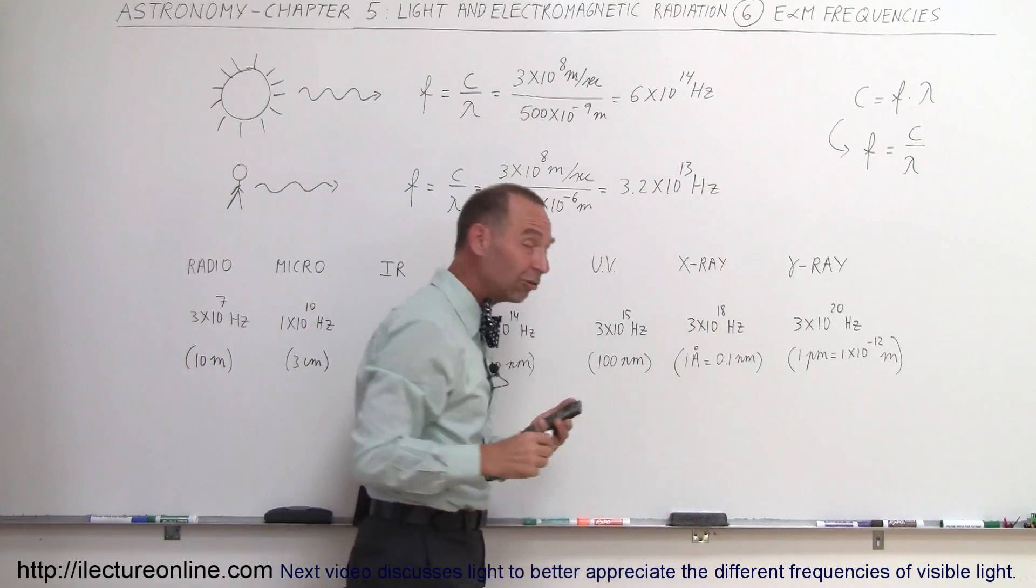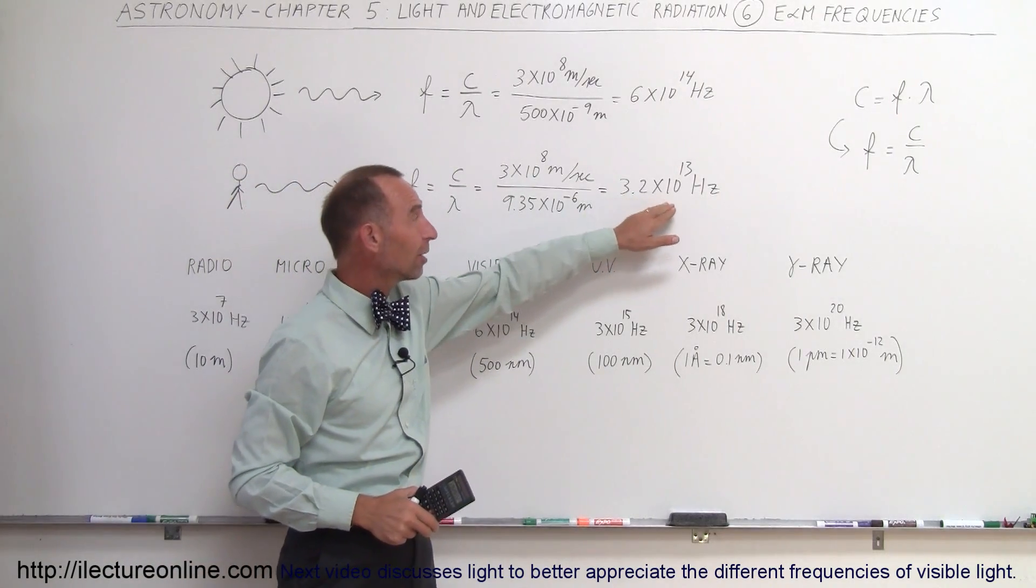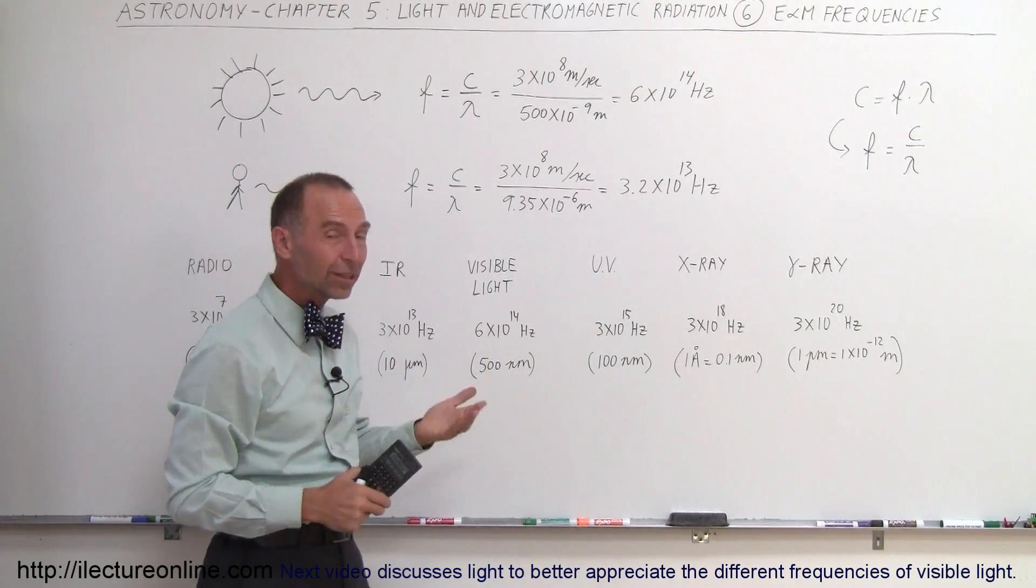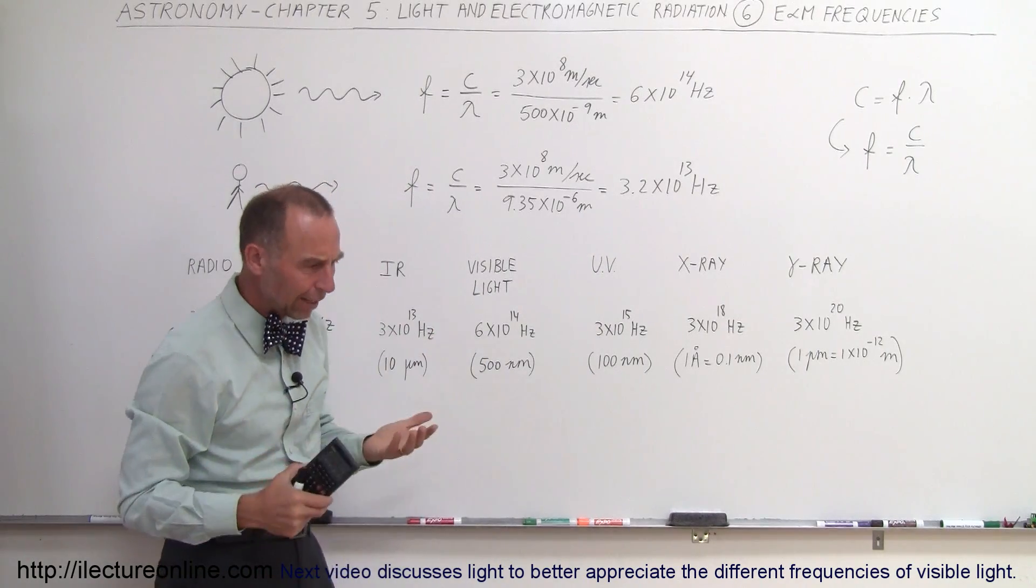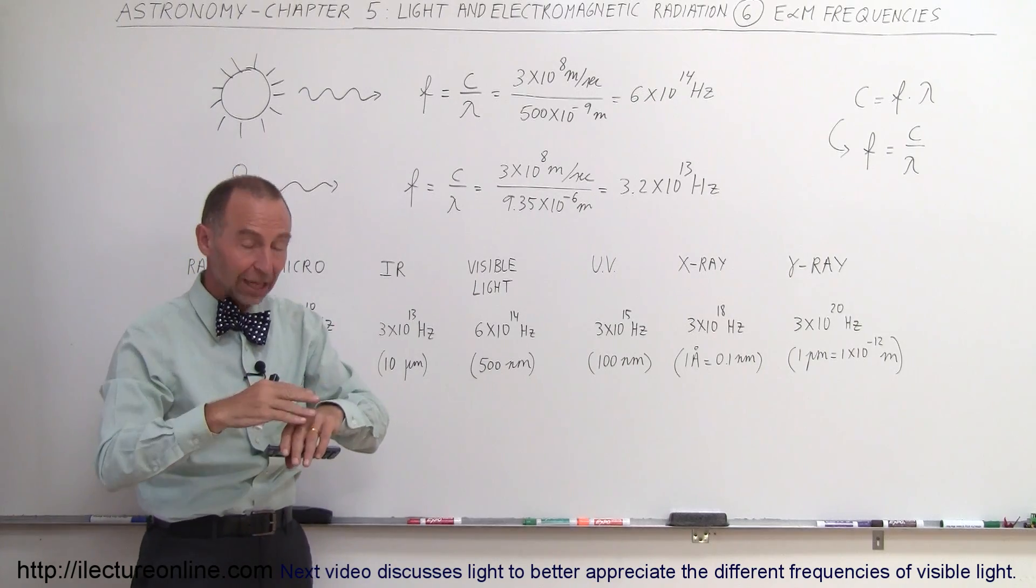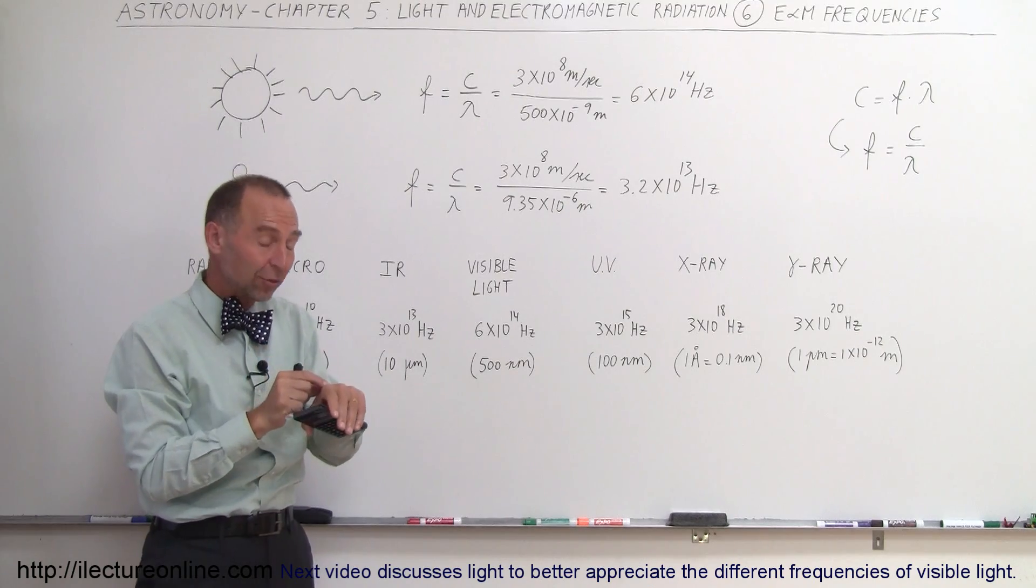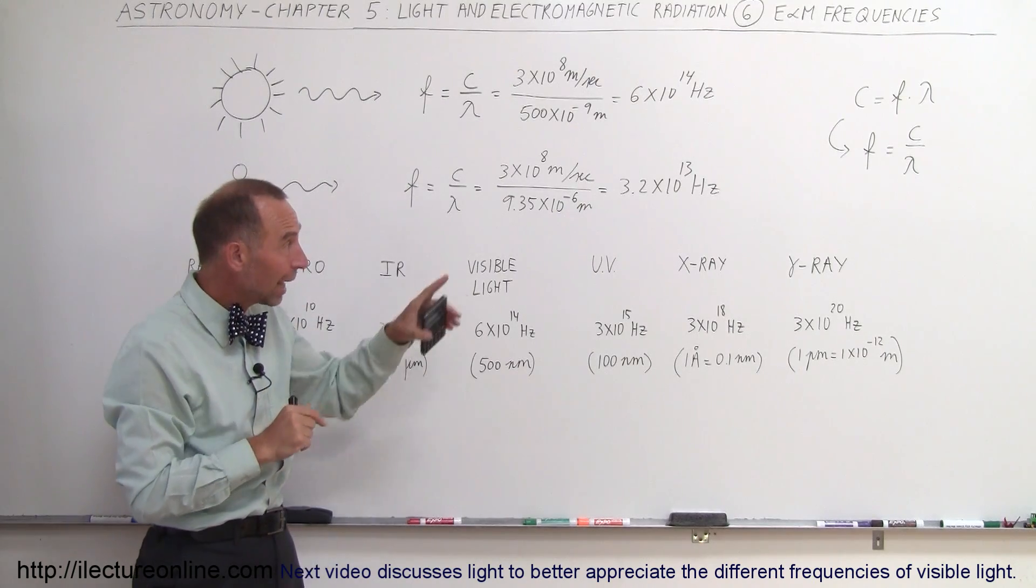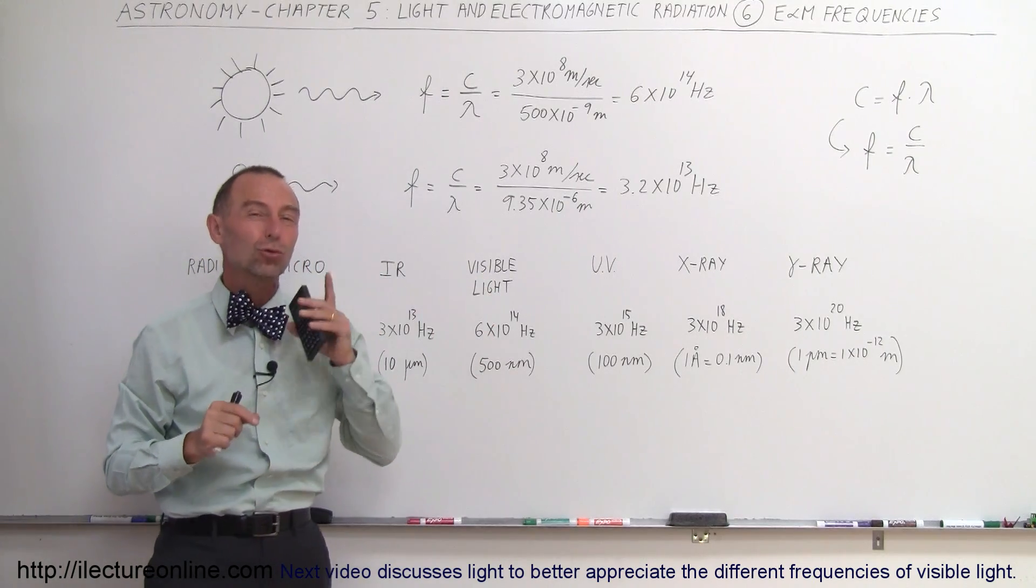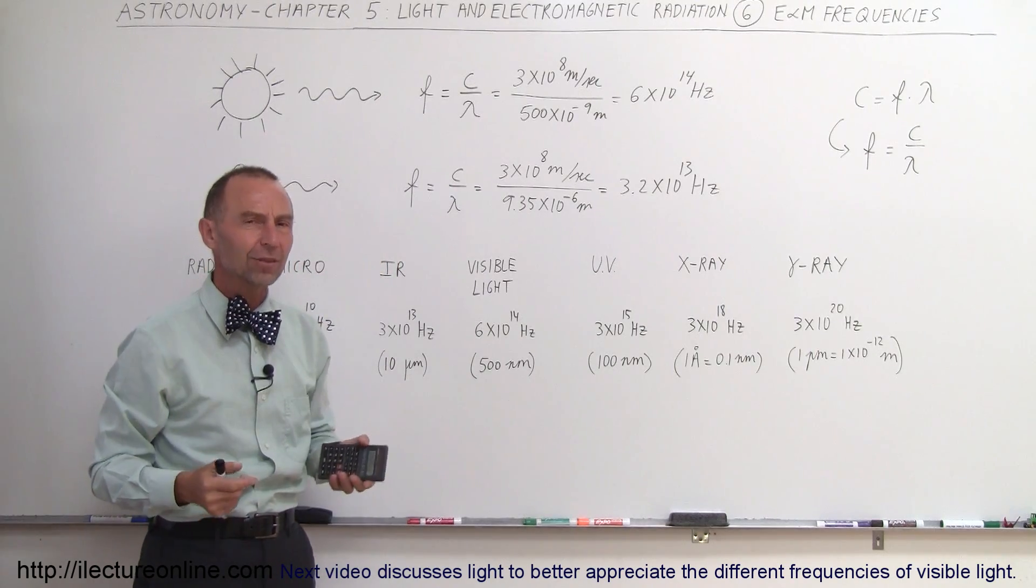Imagine, the radiation coming from our bodies has a frequency of 3.2 times 10 to the 13 hertz, that's 32 trillion times per second. And how does that happen? Well, the atoms in our bodies and on our skin, because it's the skin that radiates out the electromagnetic radiation, the atoms in our skin are vibrating back and forward at 32 trillion times per second, thus causing the radiation from our bodies to go out at the very same frequency.